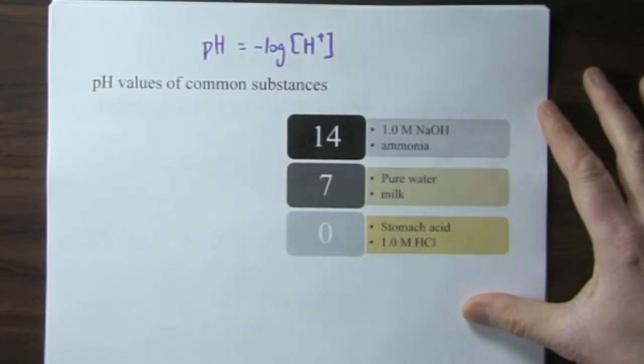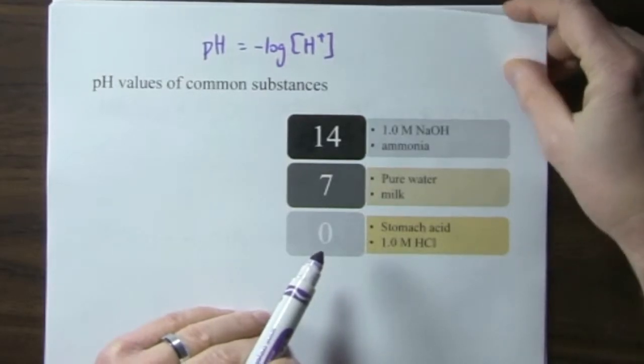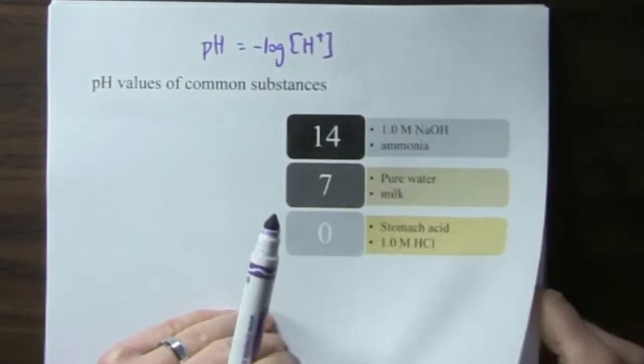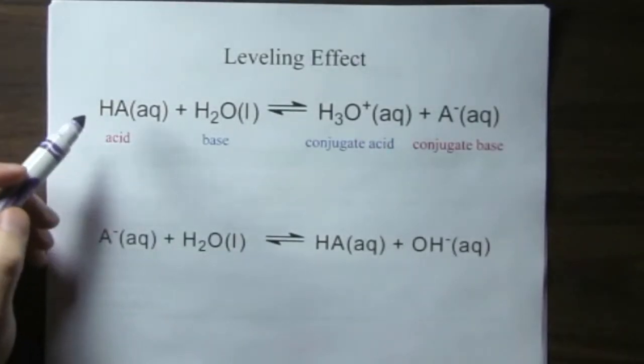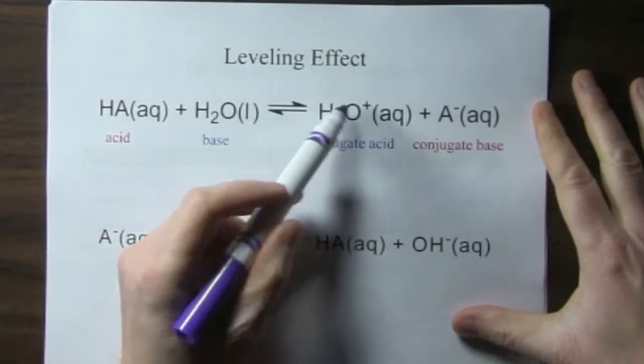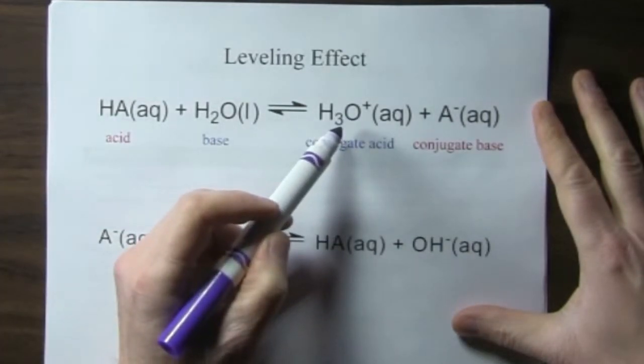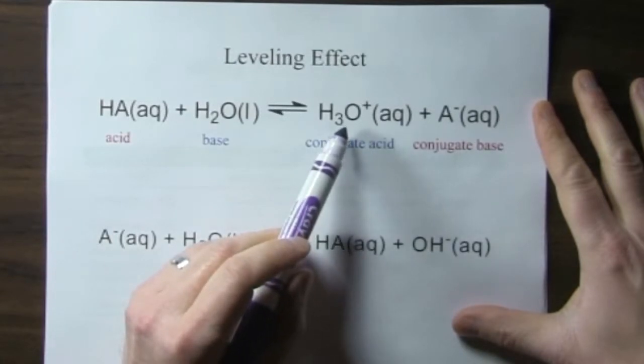So what do we mean by strong acids and strong bases? We look at what happens when we put the compound in water. Again from Arrhenius we know if we put a compound in water, an acid in water, it's going to make the hydronium ion.